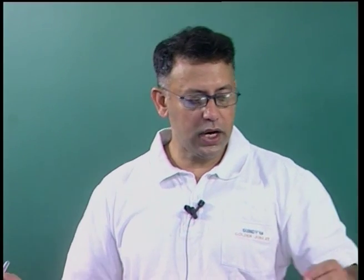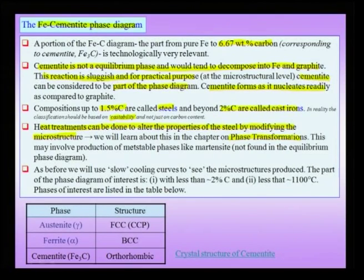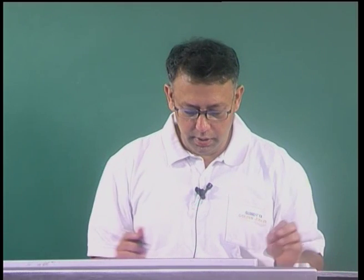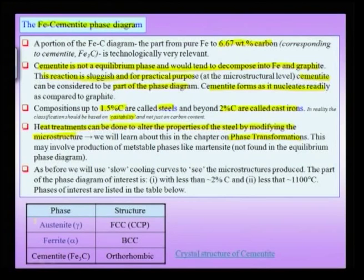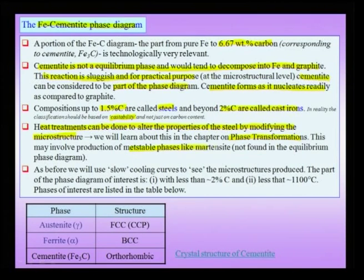If asked for the yield strength of a 0.8 percent carbon steel, there is no single number — it depends on the microstructure and the processing route. Yield strength is a microstructure-sensitive property. We will also consider metastable phases like martensite when discussing phase transformations; these are not part of the equilibrium phase diagram and will not be covered in this chapter.